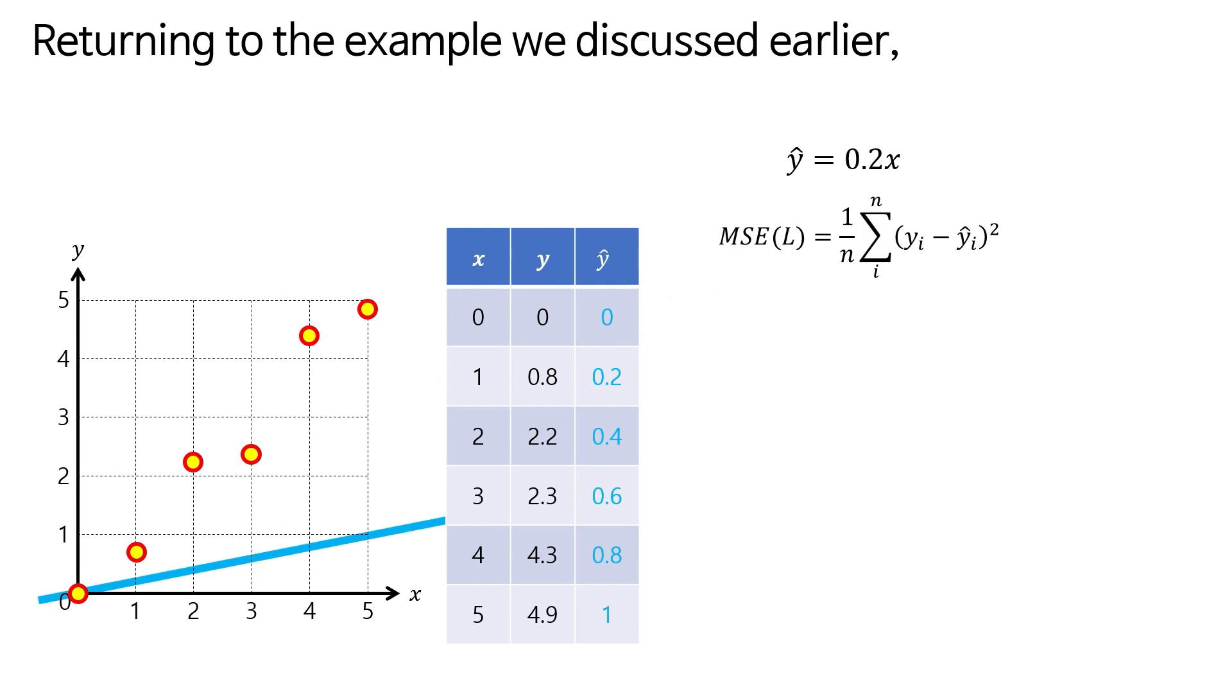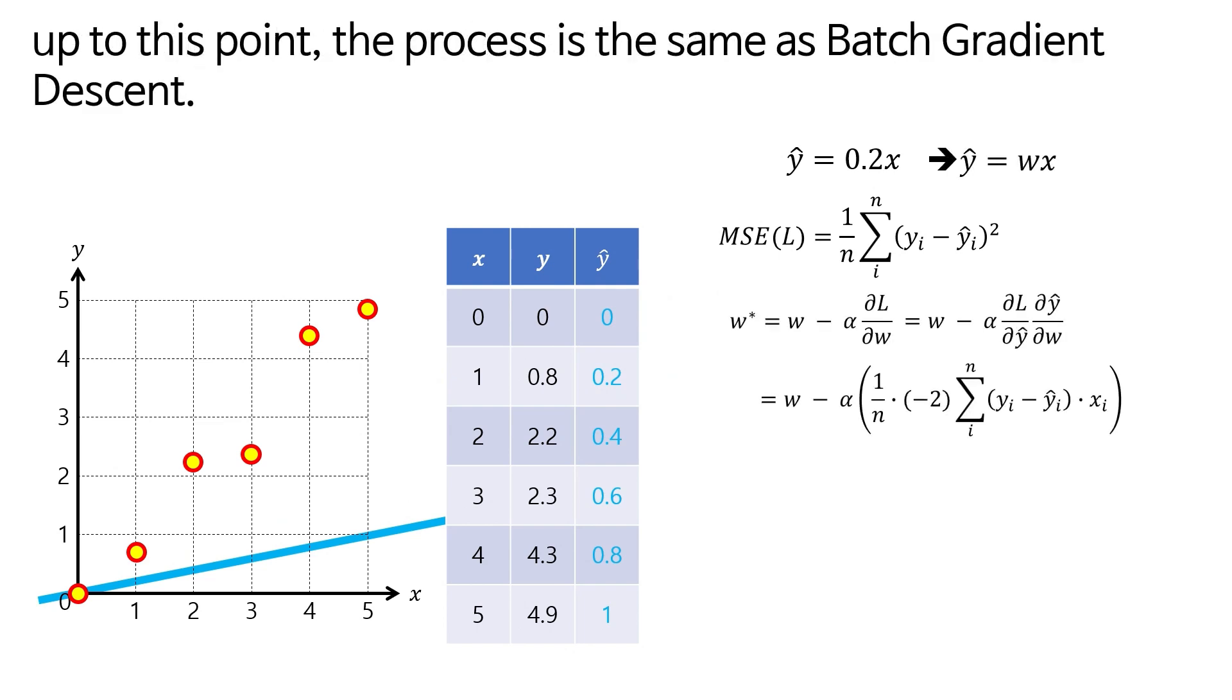Returning to the example we discussed earlier, up to this point, the process is the same as batch gradient descent.